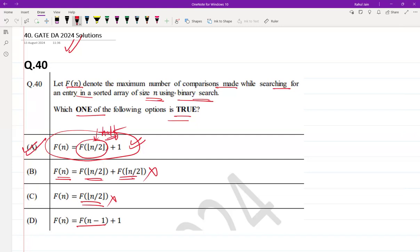In option D, if you see F(n) equal to F(n minus 1), this is incorrect because binary search does not simply reduce by one. It's kind of like linear search you can say. It is not halving the array and it is not following binary search at all. So option A is the correct answer for this GATE DA question. I hope it will help you.